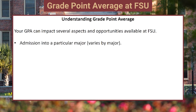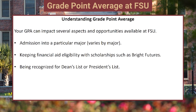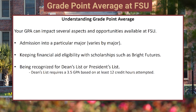Admission into a major varies by major. GPA also affects keeping financial aid eligibility with scholarships such as Bright Futures, and being recognized for the Dean's List or President's List. Dean's List requires a 3.5 GPA based on 12 credit hours attempted, and President's List requires a 4.0 on at least 12 credit hours attempted.